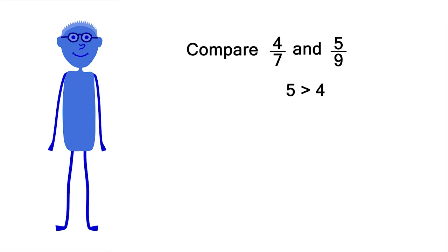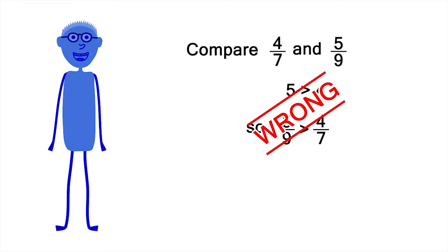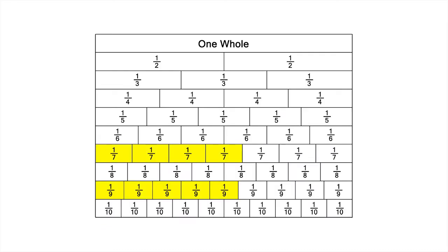You might reason that 5 is bigger than 4, so 5 ninths must be bigger than 4 sevenths. But this reasoning is wrong. Comparing these fractions on the fraction wall, you can see that 5 ninths is actually smaller than 4 sevenths.